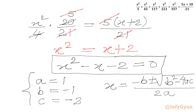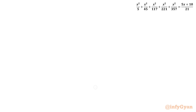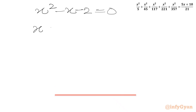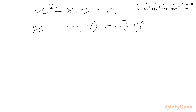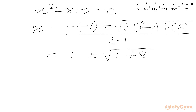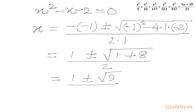Now we plug in the values. The equation is x squared minus x minus 2 equals 0. Applying the formula: minus of minus 1, plus or minus square root of (minus 1) squared minus 4 times 1 times (minus 2), all over 2 times 1. This gives 1 plus or minus square root of 1 plus 8, over 2, which is 1 plus or minus square root of 9 over 2. Since the square root of 9 is 3, we write 1 plus or minus 3 over 2.